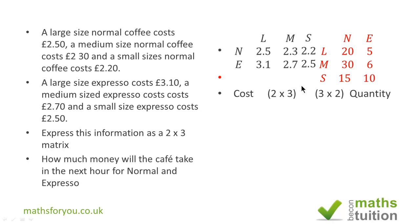The cost matrix is 2x3 and the quantity matrix is 3x2. The last number for the cost matrix and the first number for the quantity matrix must be the same — otherwise your multiplication will not work. The numbers in the middle, the 3 and the 3, must be the same.